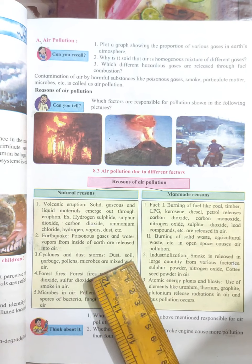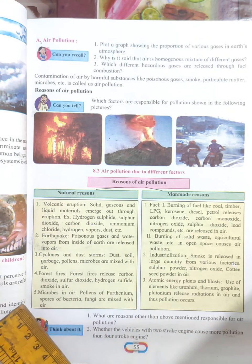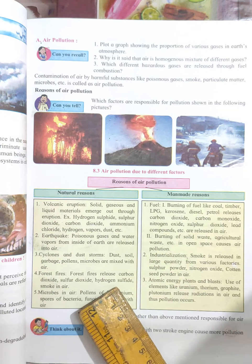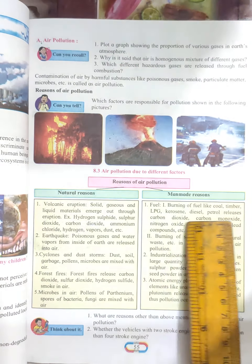Next is forest fires — forest fires release carbon dioxide, sulfur dioxide, hydrogen sulfide, and smoke into the air when burning occurs in forests. Next is microbes in air — pollens of parthenium, spores of bacteria and fungi are all mixed with air.